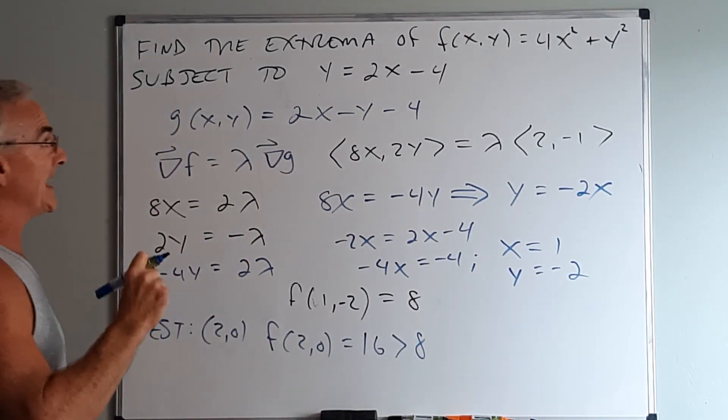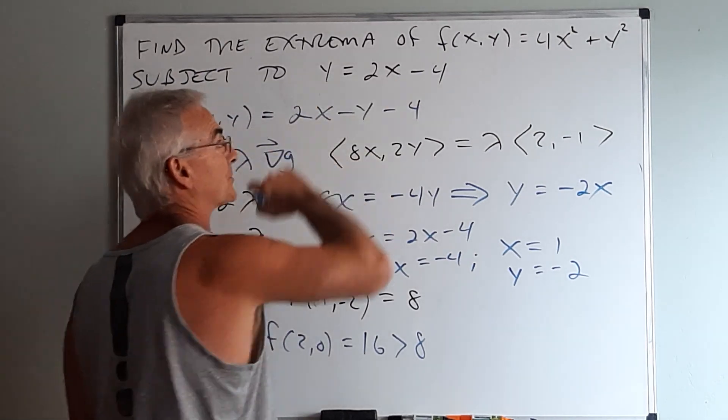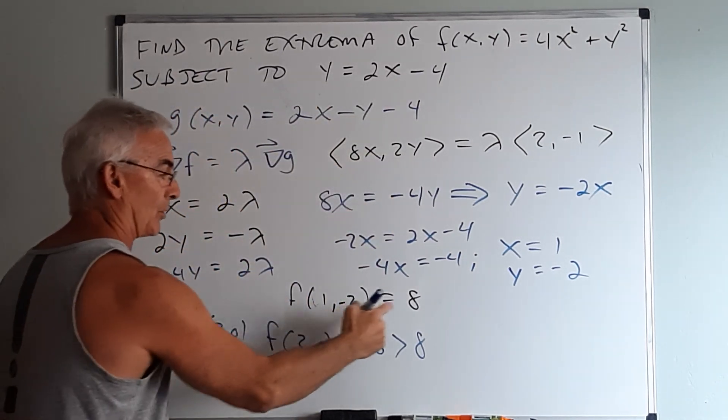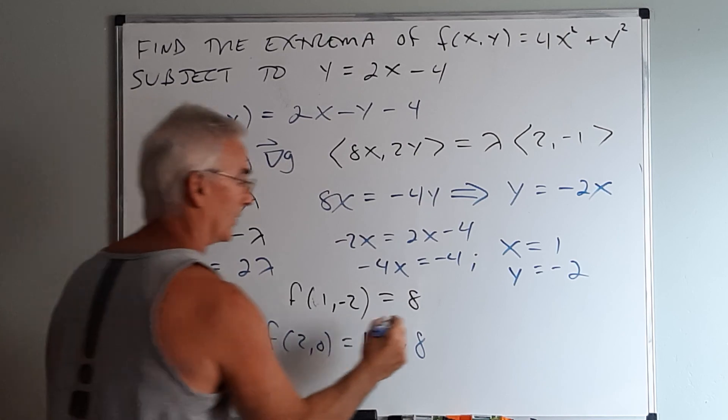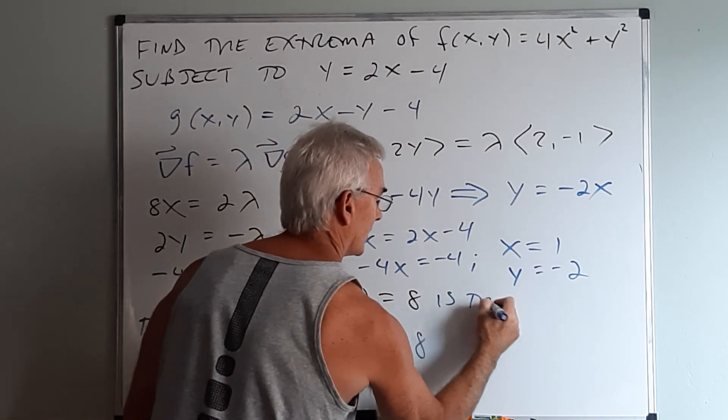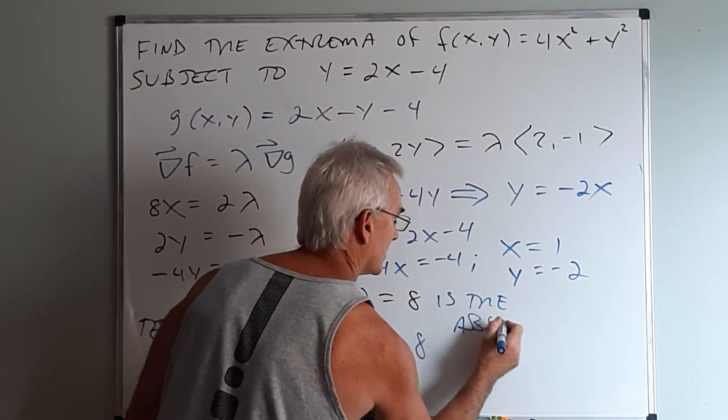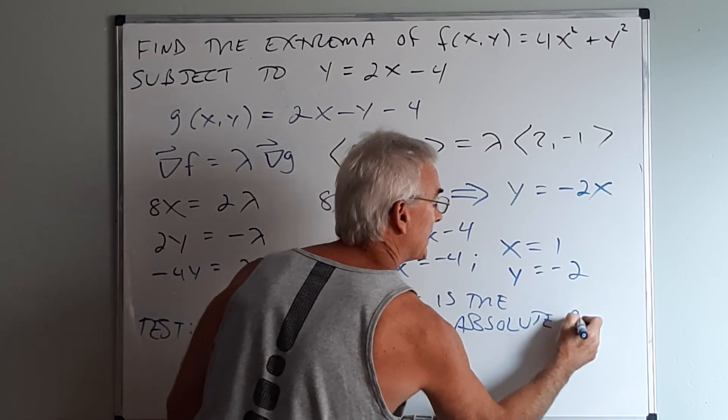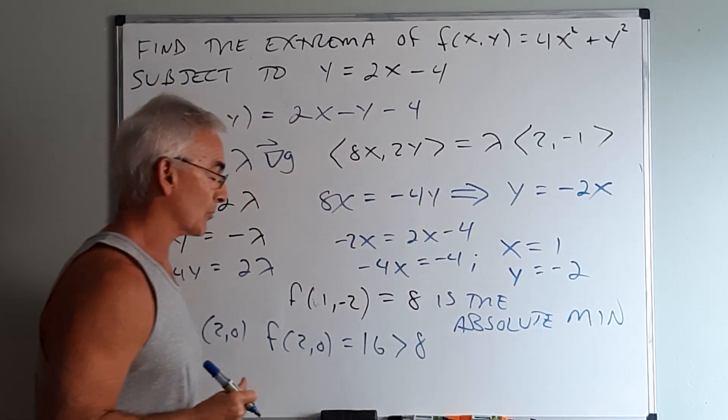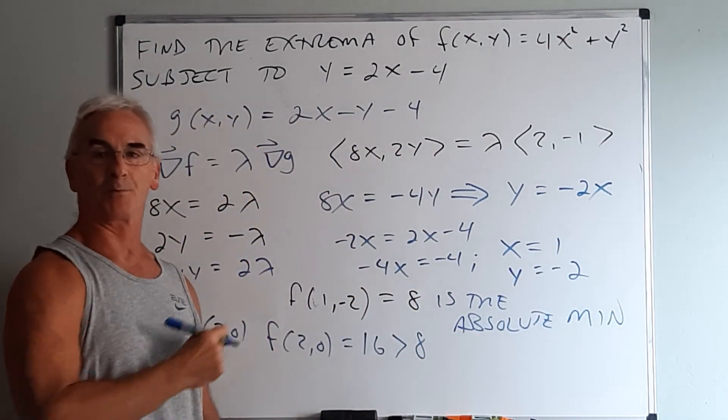That basically means that every other point on the constraint would have given me a value larger than 8. Therefore, 8 is the absolute minimum. And we have used Lagrange multipliers to solve this problem beautifully.